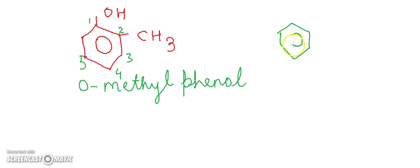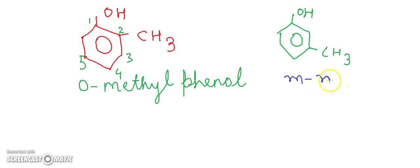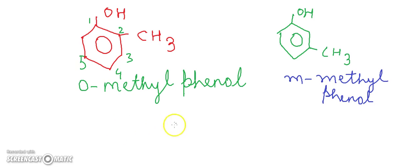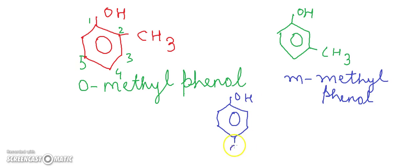The second structure has an OH functional group with CH3 at the third position, so the name for this compound is meta-methyl phenol. For the third derivative of phenol, the OH functional group is present with the CH3 at the fourth position, so the name is going to be para-methyl phenol.